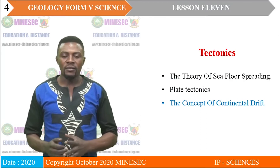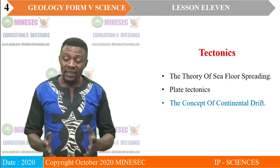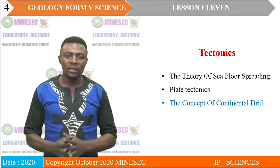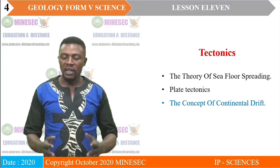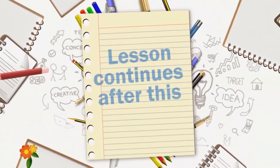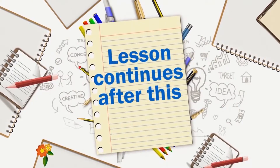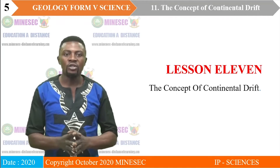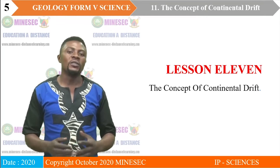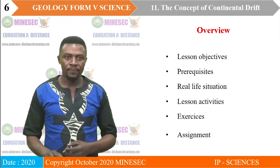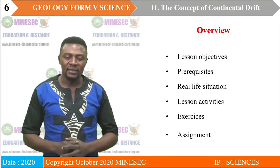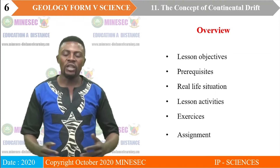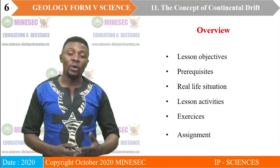The lesson for today is part of the topic we already started — tectonics. We started with the theory of sea floor spreading, and today we look at the concept of continental drift. The lesson overview includes: lesson objectives, prerequisites, a real-life situation, lesson activities, exercises, and we'll end with the assignment, just as we have always done.